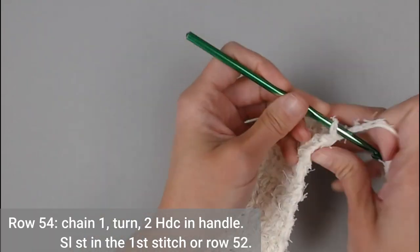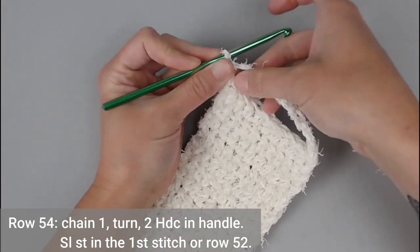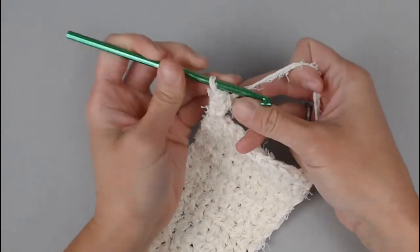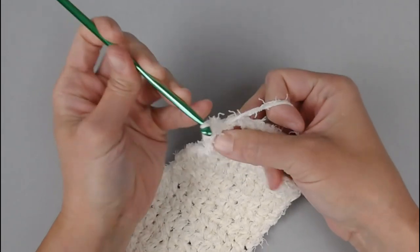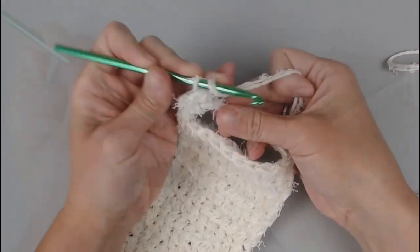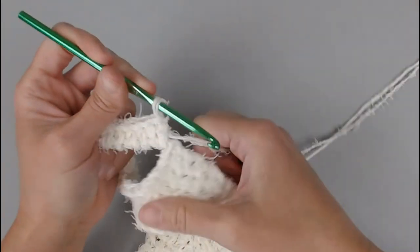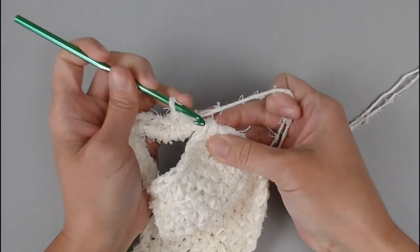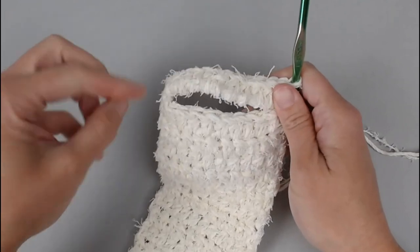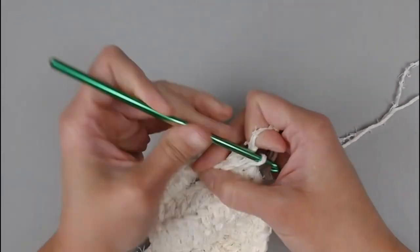For row 54, we will chain one, turn our work and make 12 half double crochets in this handle part or this chain 10 section here. So now we're actually going to slip stitch back into that 10th stitch of row 52, or technically the very first stitch of the main body, the row 52.